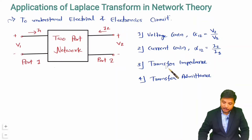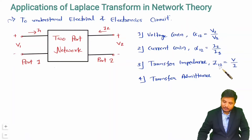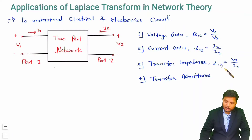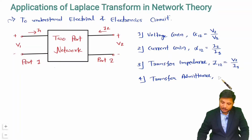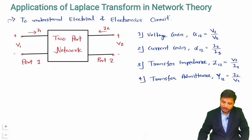For transfer impedance we use Z. Z1,2 means voltage divided by current, where the numerator has the second digit and the denominator has the first digit. So transfer impedance is output voltage divided by input current. For transfer admittance we use Y. Y1,2 means current divided by voltage, specifically I2 divided by V1.